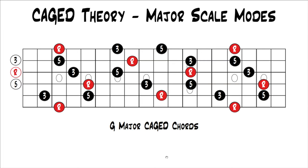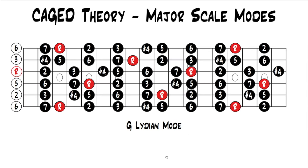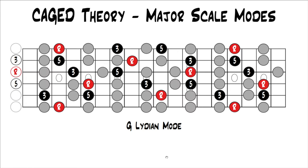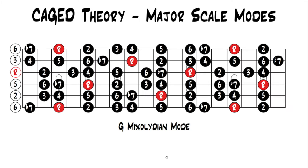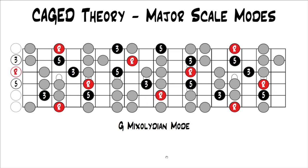So if we look at these major CAGED chords, we can fit the Lydian mode around them. We're in the key of G, so this is the G Lydian mode with all the G major CAGED chords within it — you can see how they fit right along with the G Lydian mode. This also works with Mixolydian. Here's the G Mixolydian mode with all the CAGED chords in it. Because Ionian, Lydian, and Mixolydian all build major triads, major triad chords fit within each of those modes — you're not just stuck to the major scale.